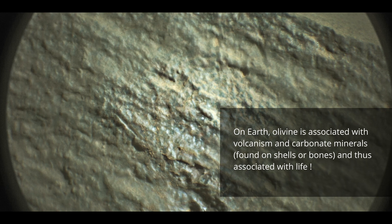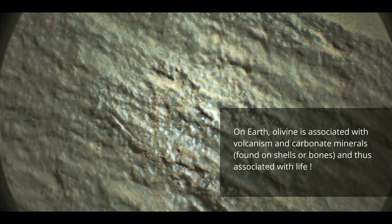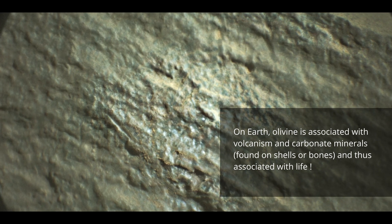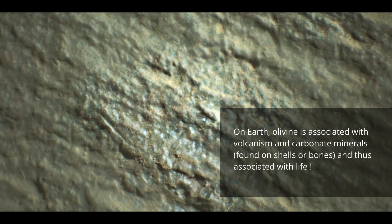On Earth, olivine is associated with volcanism and carbonate minerals, found on shells or bones, and thus associated with life.